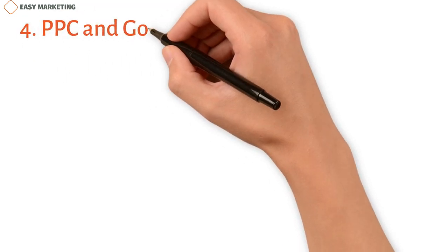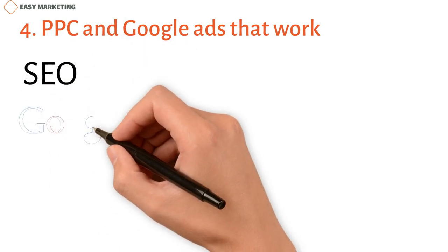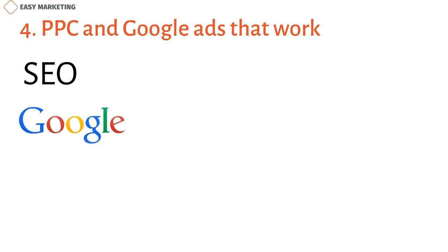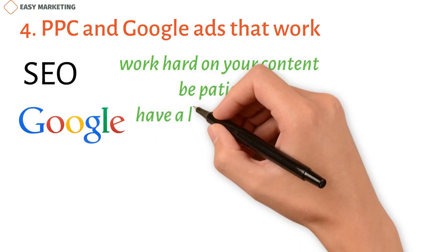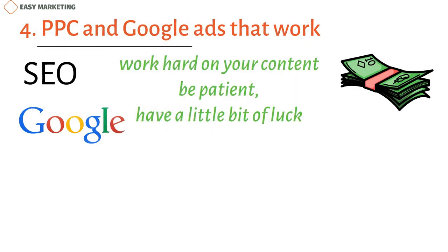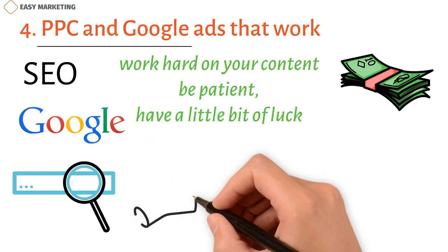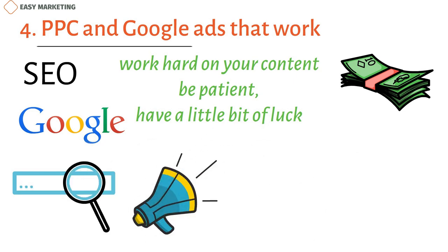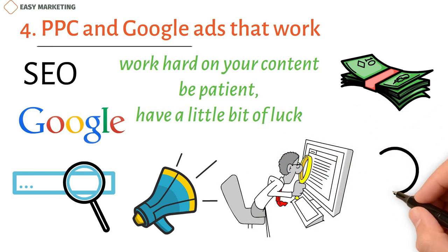PPC and Google Ads that Work: But SEO is not a sure thing. You can't buy your way to the top of Google's organic search results. To get there, you have to work hard on your content, be patient, and have a little bit of luck. This is also why a lot of businesses spend money on Google and PPC ads. When you pay for marketing, your manufacturing business can show up on search results pages in minutes, but your ads have to be good. That means doing the study to figure out which keywords to focus on and how your buyer personas might search online.